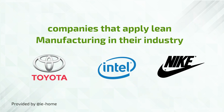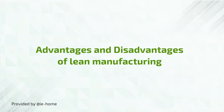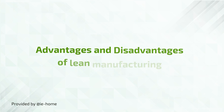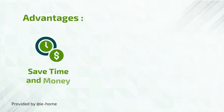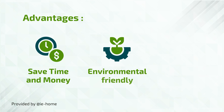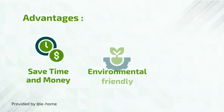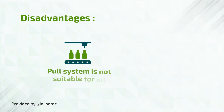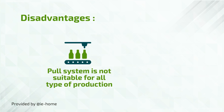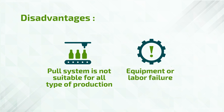There are some well-known companies that apply lean manufacturing in their industry. Advantages of lean manufacturing: 1. You will save time and money significantly. 2. It is environmentally friendly, by minimizing wastes as much as possible. 3. Improved customer satisfaction, achieved by using the pull system. Disadvantages: 1. The pull system is not suitable for all types of production. 2. Equipment or labor failure.